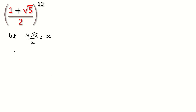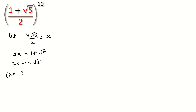We can write 2x = 1 + √5, and therefore 2x − 1 = √5. Squaring both sides, (2x − 1)² = (√5)² = 5. Expanding the left side gives 4x² + 1 − 4x = 5.